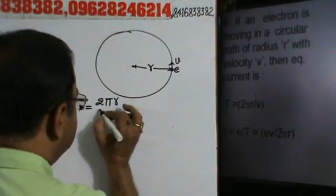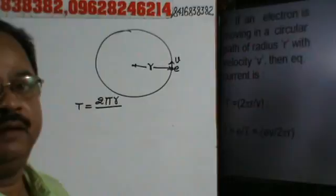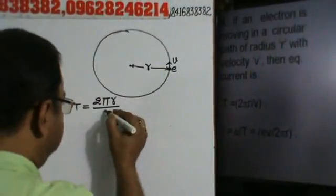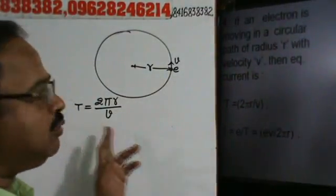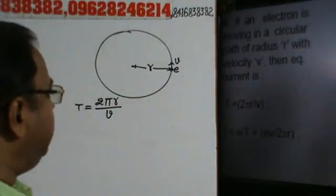This will cover a distance of 2πR. Aor velocity kya hai? V. So time period will be equal to 2πR by V.